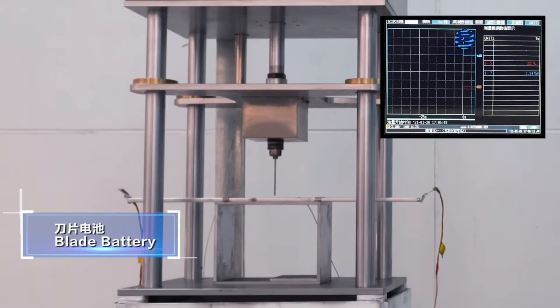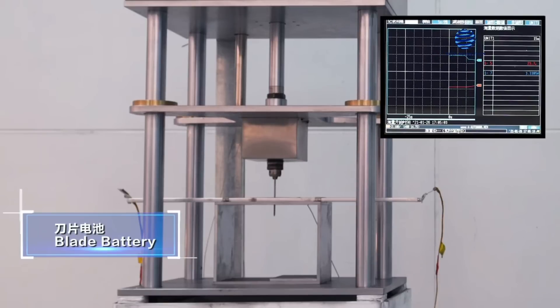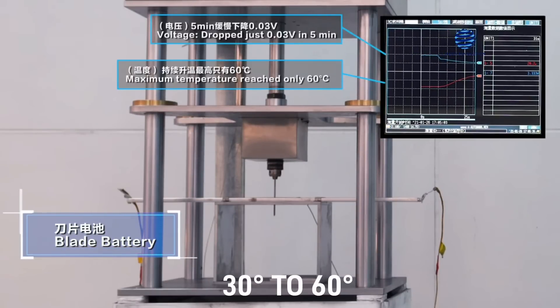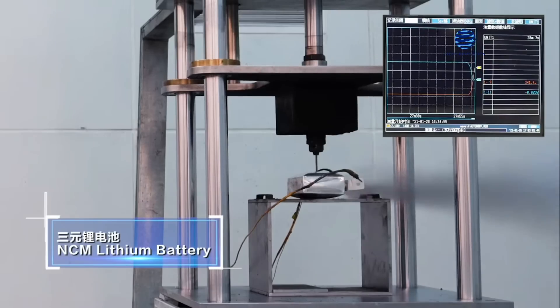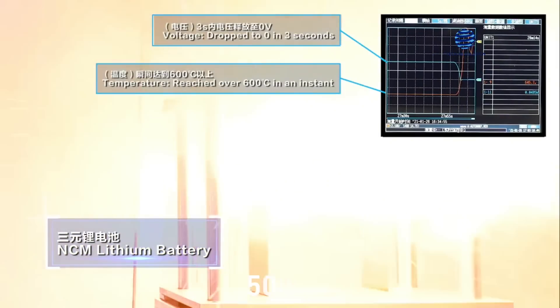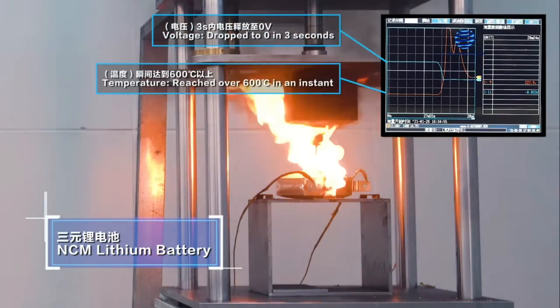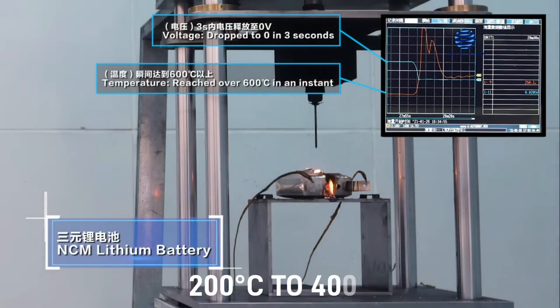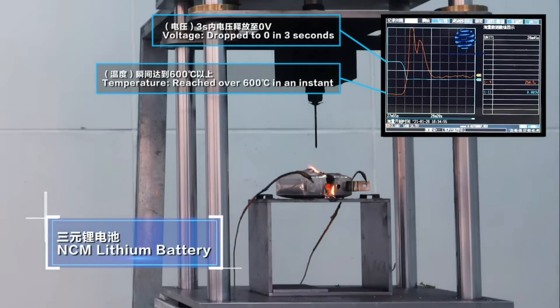During nail penetration, the battery did not emit any smoke or fire, and the surface temperature ranged from 30 to 60 degrees. In the same test, a ternary lithium battery reached 500 degrees Celsius and burned, while a conventional LFP block battery reached 200 to 400 degrees Celsius but didn't burn or emit smoke.